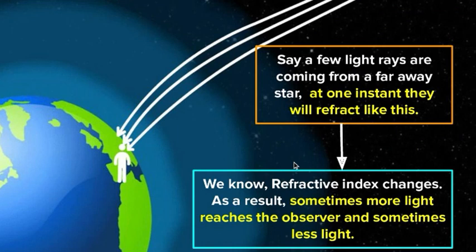Let's say this is layer A, this is B, this is C. A will have different refractive index, B will have different, C will have different. As we come along with time, refractive index keeps on changing. So let's say a few light rays are coming from a far away star. At one instant they will refract like this, at another instant they refract differently. So as it comes from the layers, refractive index keeps on changing.